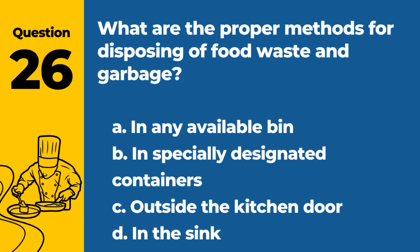Question 26. What are the proper methods for disposing of food waste and garbage? a. In any available bin. b. In specially designated containers. c. Outside the kitchen door. d. In the sink. Answer: b. In specially designated containers. Proper disposal methods include using designated containers to prevent attracting pests and maintain hygiene.